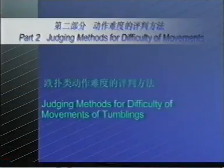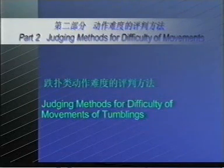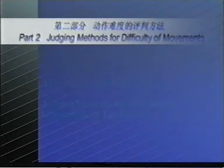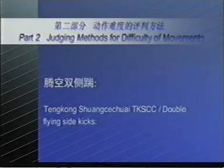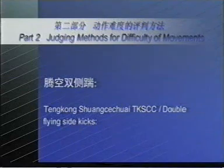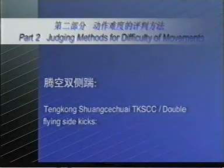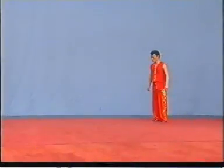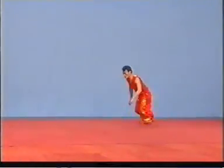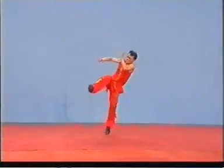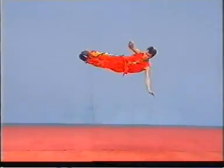Judging methods for difficulty of movements of jumps. Tenkung Shung-Ce Tri (TKFJ), or Double Flying Side Kicks. If the kicked leg is below the horizontal level, no points shall be awarded.